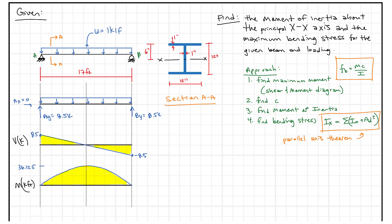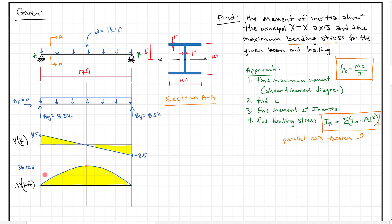In this problem we are given the task of finding the moment of inertia of a more complicated section. This composite section has plates on the top, plates on the bottom, and a plate in the middle — it's not a section defined in the AISC Shapes database. We have to calculate the moment of inertia to find our maximum bending stress. We are given a beam loading and a shear moment diagram, and the maximum moment we have to deal with is 36.125 kip-feet.